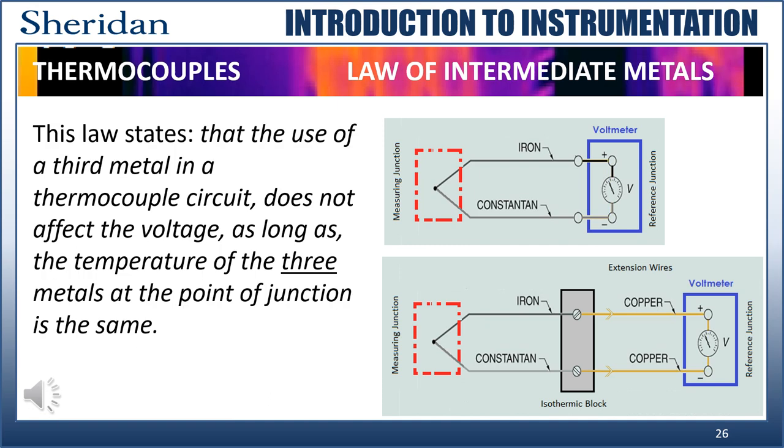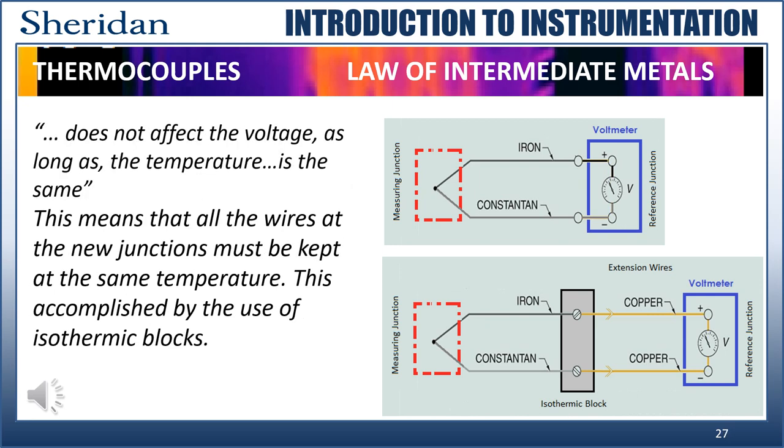So we need to observe the law of intermediate metals, which tells us how to extend the circuit successfully. The law of intermediate metals states that a third metal in a thermocouple circuit does not affect the voltage, providing the temperature of the three metals at the point of the junction is the same. This means that more common conductor materials can be used. This has advantages such as cost and availability should the extension wires require replacement. We don't want to create any new unintended Seebeck voltages at the extension junctions. The first part says we must ensure that the temperature of the extension junctions is the same. This is accomplished by connecting the wires on an isothermic block. An isothermic block is made from a material that is thermally uniform. That is, all points of the block are exactly the same temperature. The terminal screws on the block themselves are made of the same metal as the thermocouple, so we don't create another thermocouple. Keep this in mind if you ever have to change a thermocouple. Always observe polarity to avoid disaster.